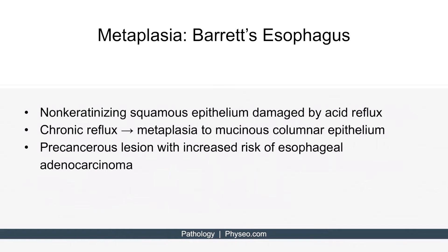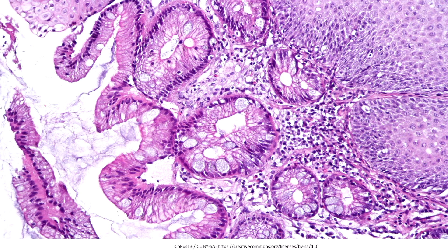Let's talk about Barrett's esophagus in more detail. In a normal esophagus, the lumen is lined by non-keratinizing squamous epithelial cells. In the setting of chronic reflux, acid from the stomach inappropriately passes up through the gastroesophageal junction and damages the esophageal epithelium. Eventually, this leads to metaplasia such that the native cells of the esophagus undergo metaplastic change to columnar epithelium with goblet cells, also known as mucinous columnar epithelium. Here's a histological image: we can see elongated columnar cells and dispersed goblet cells in between — this is the histological finding diagnostic for Barrett's esophagus. Barrett's esophagus is a precancerous lesion with an increased risk of progression to esophageal adenocarcinoma.